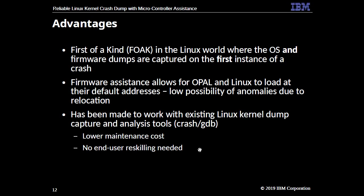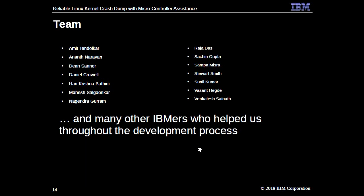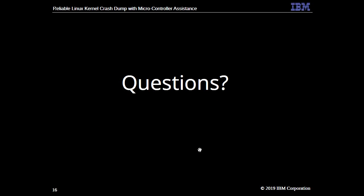Some advantages of this method: this is the first solution where we can get both the kernel dump and the firmware dump in the first instance. Because we use firmware assistance and the next kernel is booted freshly, we don't see the issues we hit in the kdump case. It has been built on top of existing tools like crash and GDB so we don't need to reskill service engineers, and there is lower maintenance overhead. Most of the patches are out in the mailing list and we are hoping to get it upstream in a month or so. Thank you. Questions?